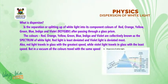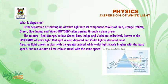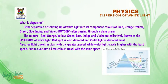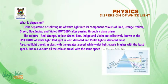Let's start with dispersion of white light. What is dispersion? Dispersion is the separation or splitting up of white light into its component colors of red, orange, yellow, green, blue,